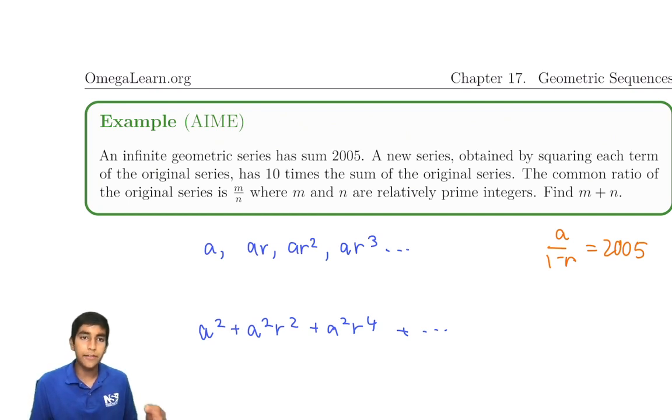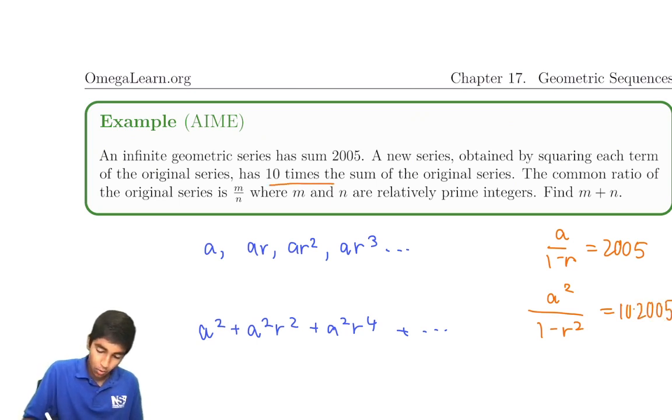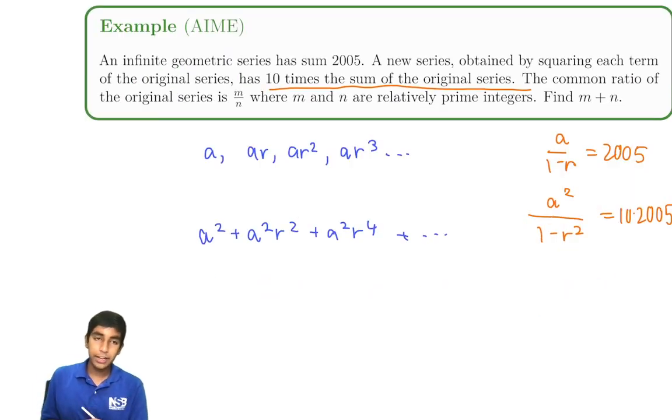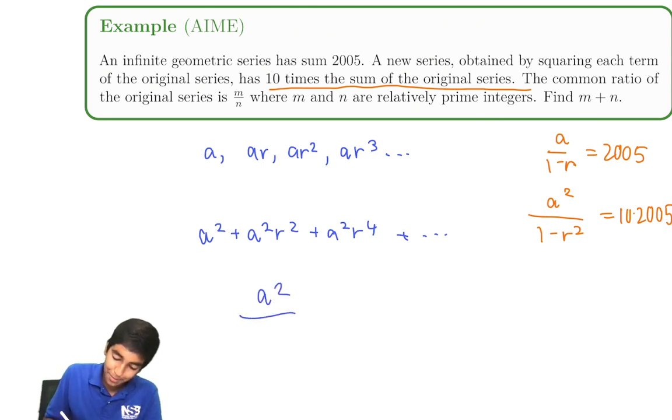First of all, what is this top sum? a over 1 minus r, simply by the formula. And this is 2005. What about on the bottom? It's the square of every term. The first term is a squared, the common ratio is r squared. So a squared over 1 minus r squared is 10 times more, 10 times 2005, 10 times more than the sum of the originals. Do we notice anything about this? Specifically, I want you to focus on the denominator. Do you notice anything? Any factorization in particular?